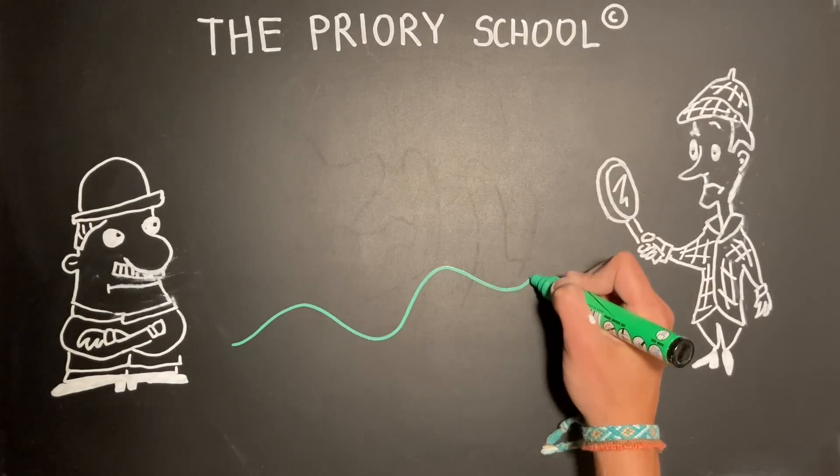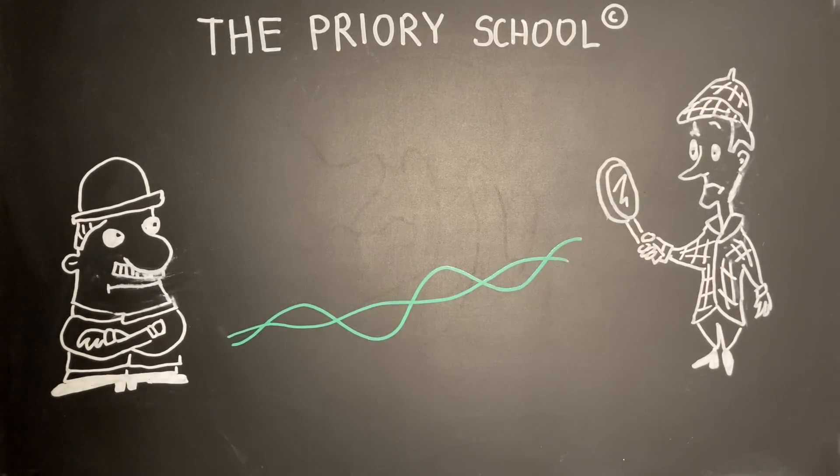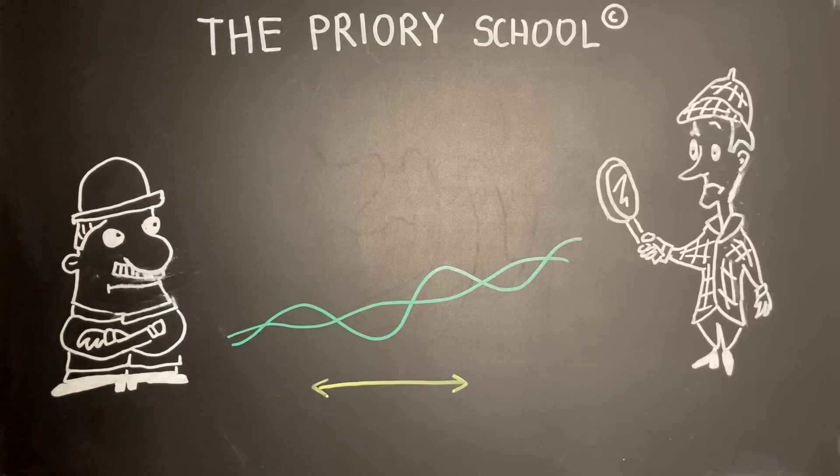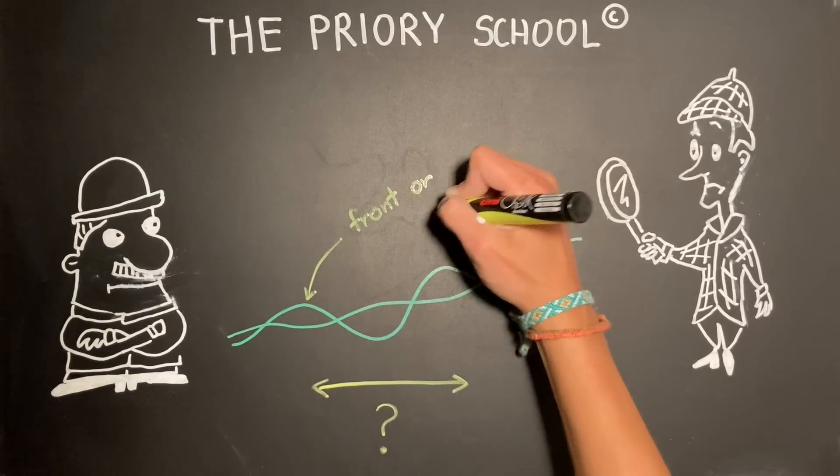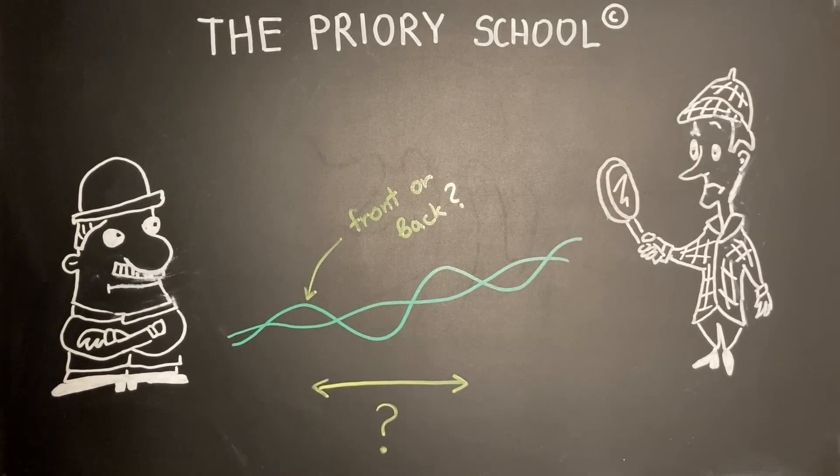This time Holmes and Watson discover a pair of tire tracks, for example these ones. How can the detective duo determine whether the bicycle was moving left or right and which wheel created each of the tracks? I will not discuss the solution here, but please follow the link in the description to an excellent video by George Hart if you're intrigued.